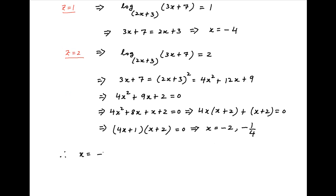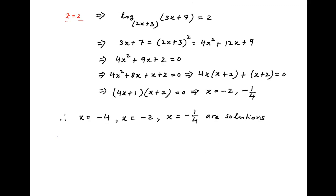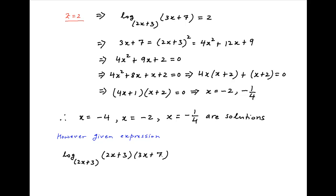Therefore the possible values of x are minus 4, minus 2, and minus 1 upon 4. Now we go back to the original equation which is log of (2x plus 3)(3x plus 7) to the base (2x plus 3) is equal to 4 minus 2 times log of (2x plus 3) to the base (3x plus 7).